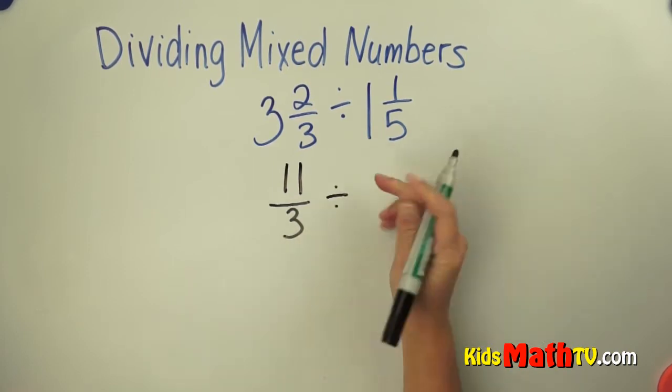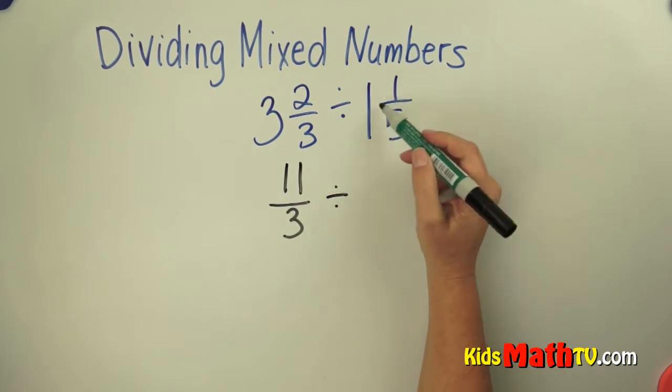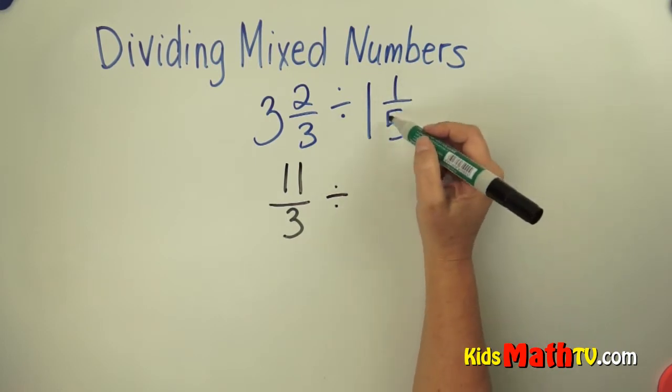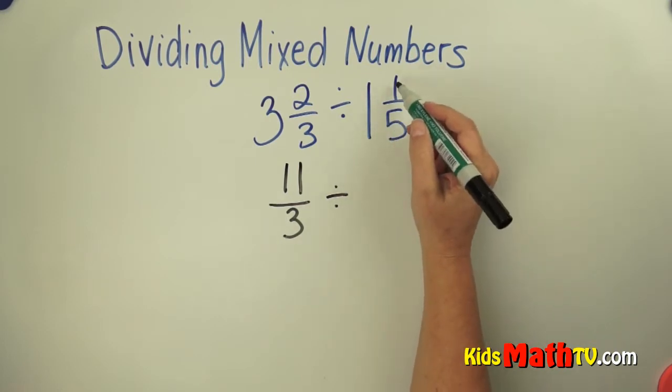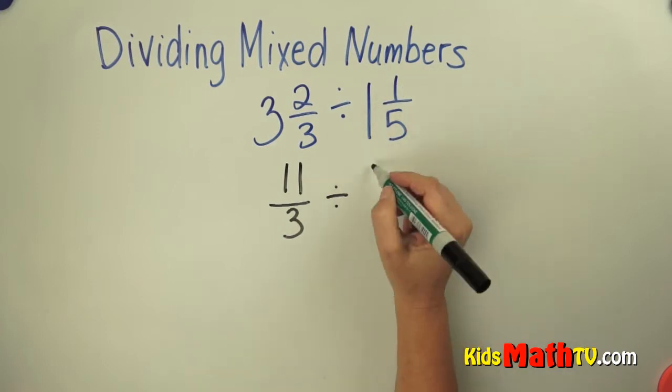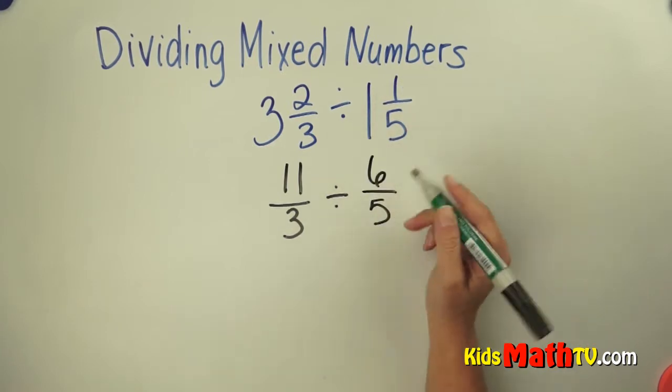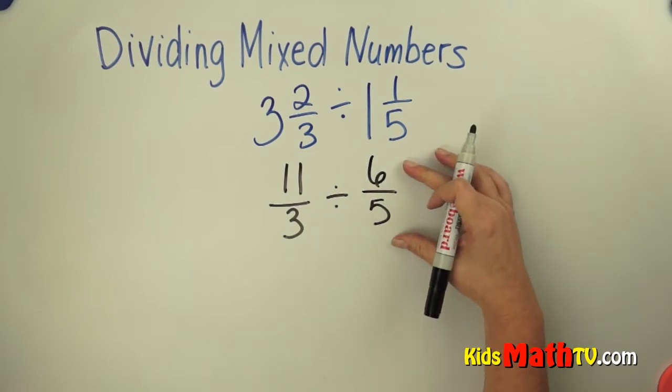We're going to leave this a division problem for now, then we make this mixed number into an improper fraction. 5 times 1 is 5, plus 1 more is 6 fifths. Now we have a division of fractions.